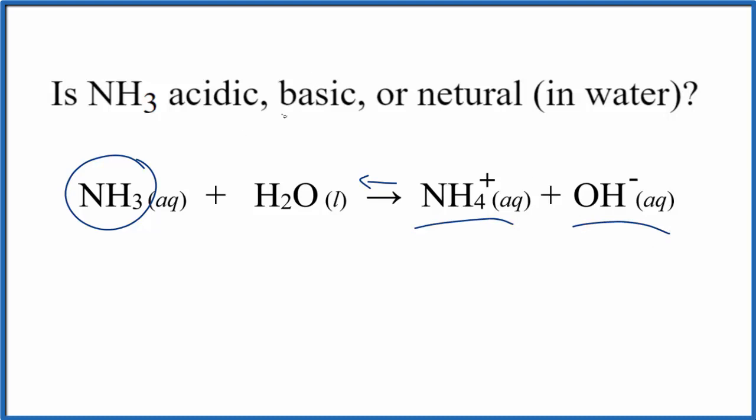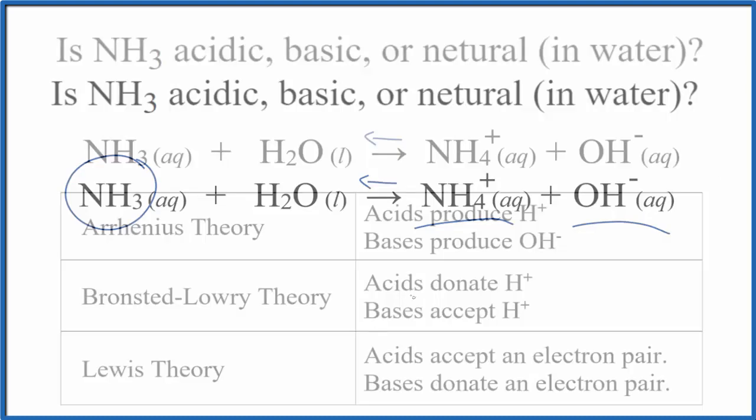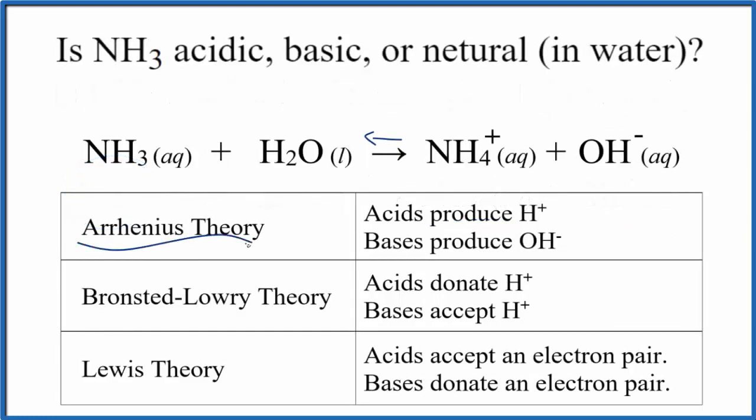That's why we say it's a weak base. Let's look at some acid-base theories to explain what we mean. The simplest theory, Arrhenius theory, says that bases produce OH-, and there's our hydroxide ion.